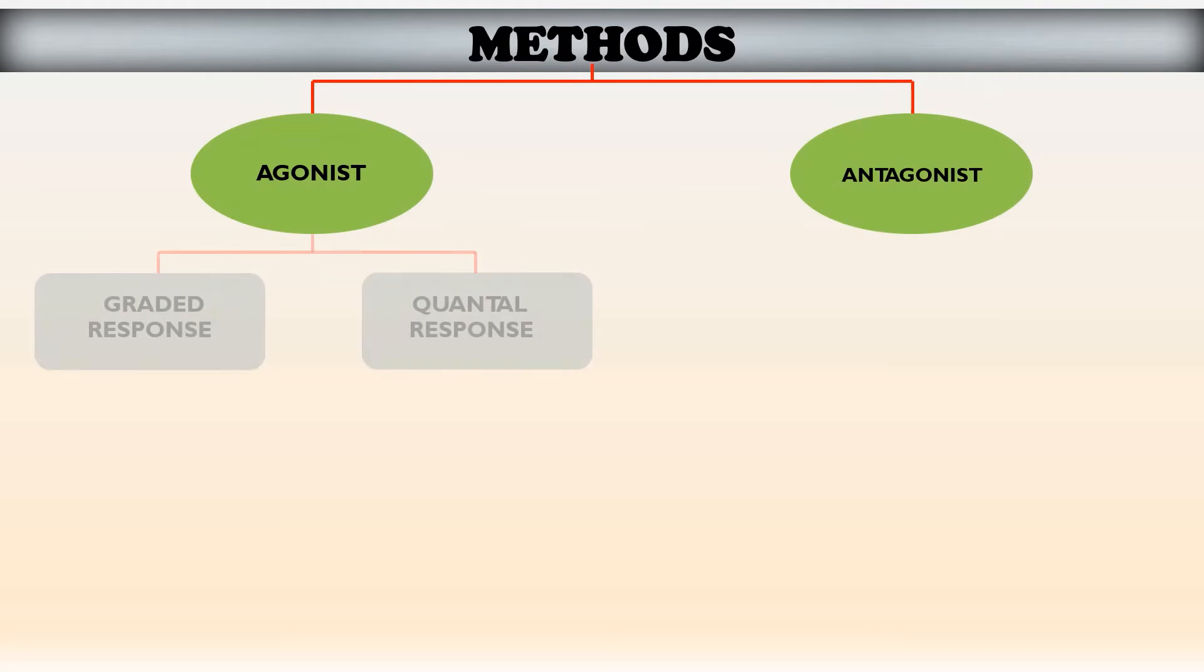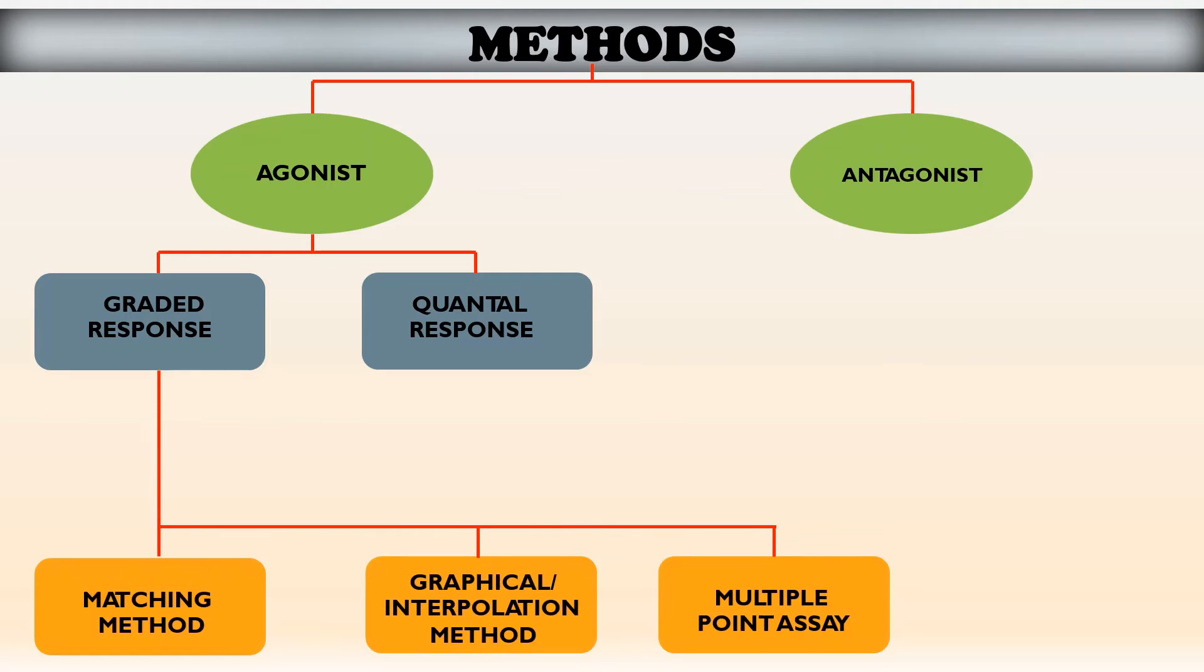This flow chart depicts methods of bioassay for agonist and antagonist. Method for agonist with graded response include matching method, graphical or interpolation method and multiple point method. Method for quantal response is endpoint method. Method of antagonist is done with graphical method.